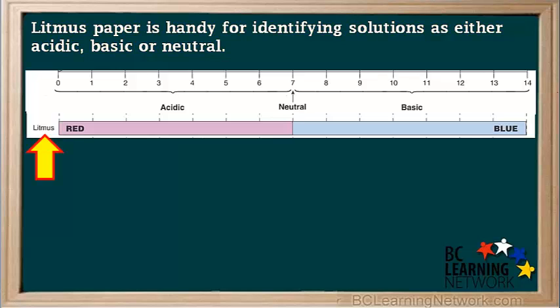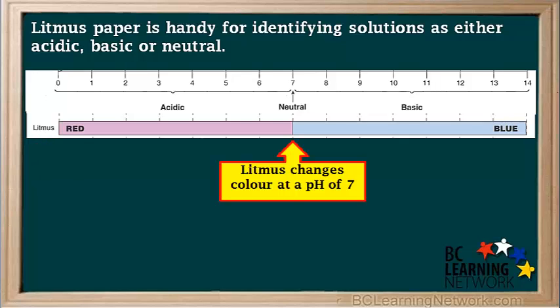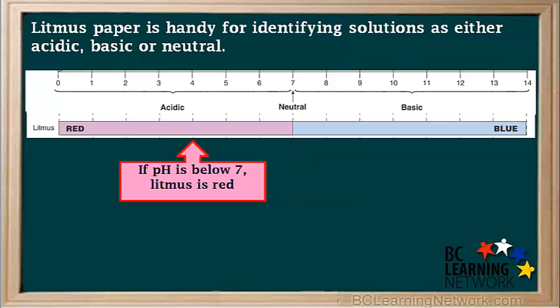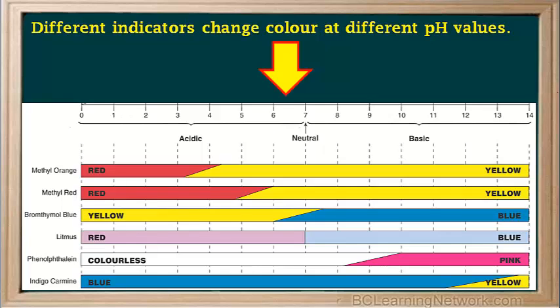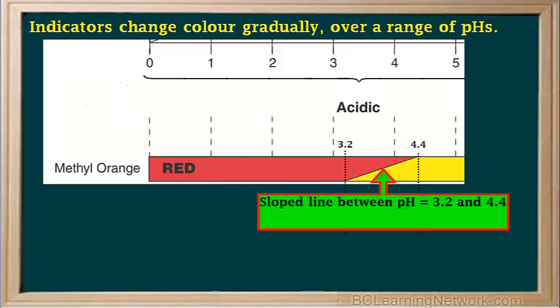Looking at a chart of the color of litmus paper at pHs from 0 to 14, we see that litmus changes color from red to blue at pH 7. So if the pH is below 7 and the solution is acidic, litmus is red. And if the pH is above 7 and the solution is basic, litmus is blue. But litmus paper isn't the only indicator. This table lists several indicators, and we can see that each indicator will change color at a different pH value.